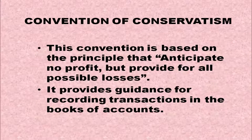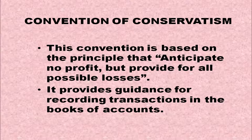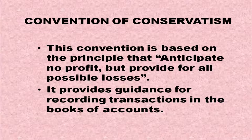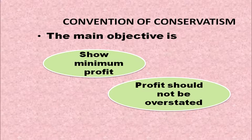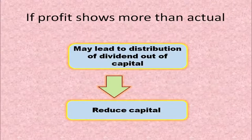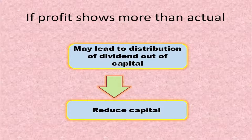The next convention is the Convention of Conservatism. This convention is based on the principle: Anticipate no profit, but provide for all possible losses. It provides guidance for recording transactions in the books of accounts. The main objective is to show minimum profit — that is, profit should not be overstated. If profit is shown more than the actual, it may lead to distribution of dividend out of capital, thereby reducing capital.